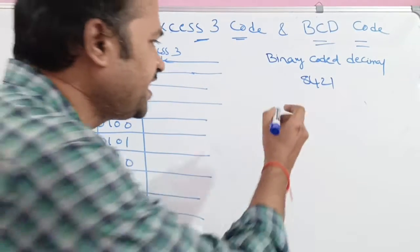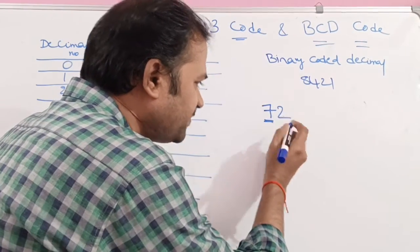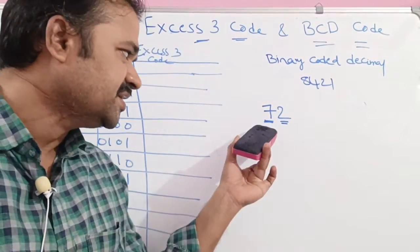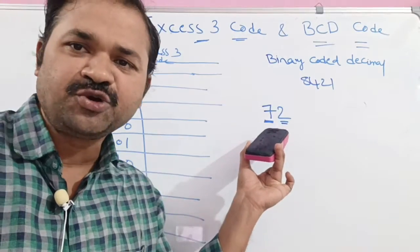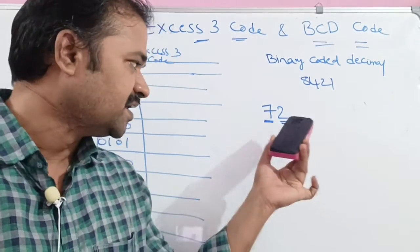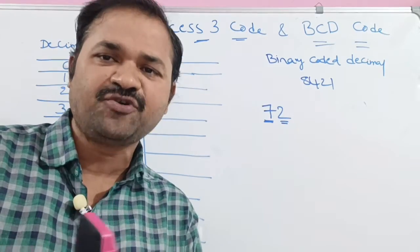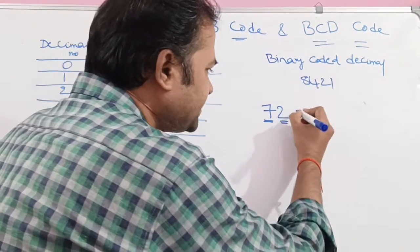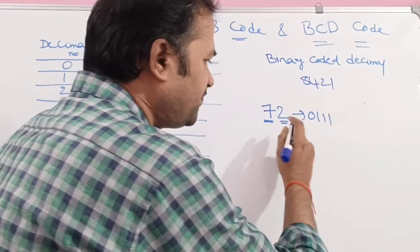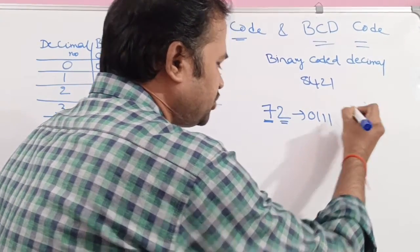For example, let us take the number 72. Here 7 is one decimal digit and 2 is another decimal digit. To represent 7 we require 4 bits and to represent 2 we require 4 bits. In 8421 notation, 7 is represented as 0111, and 2 is represented as 0010.